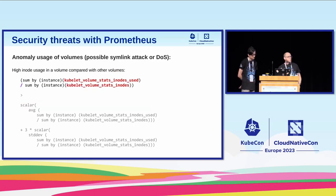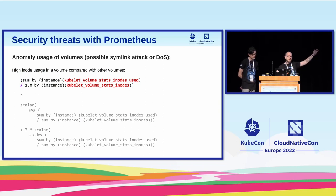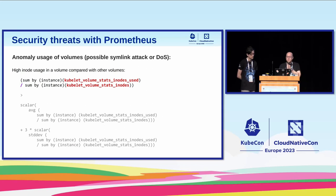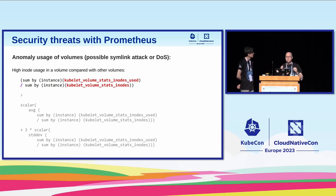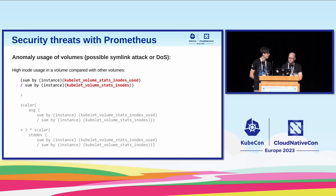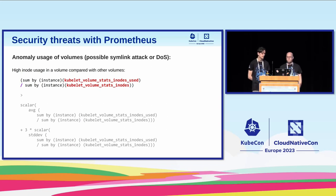For example, the gray part of this query is calculating the threshold through the set index. What we are looking at is all the inode usages of all the volumes in the cluster, and checking if any of them has a higher rate of usage. In this case, maybe an attacker is trying to do a symlink attack or brute forcing file symlinks, or maybe they're already running a DoS.